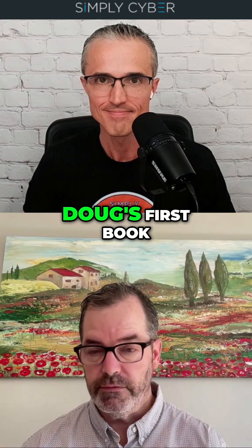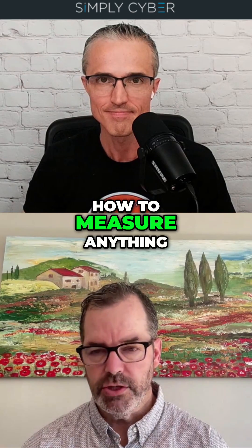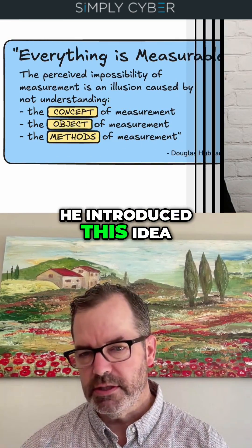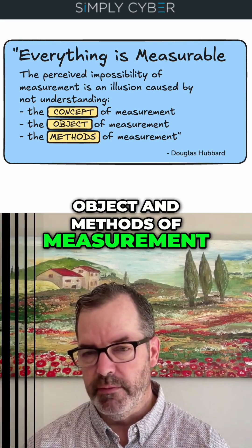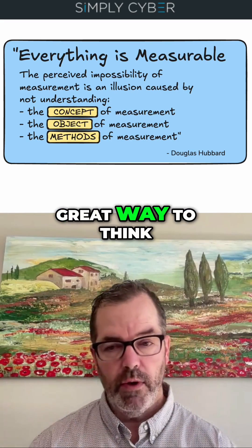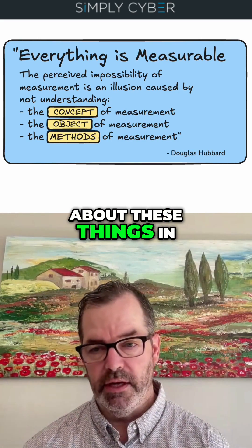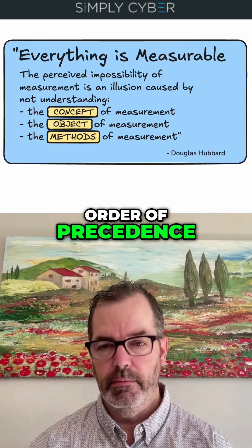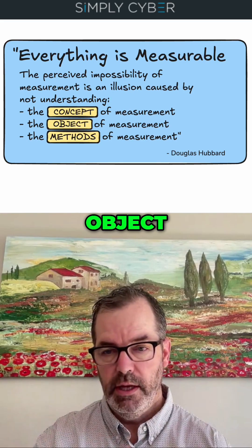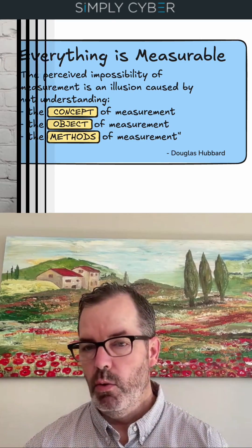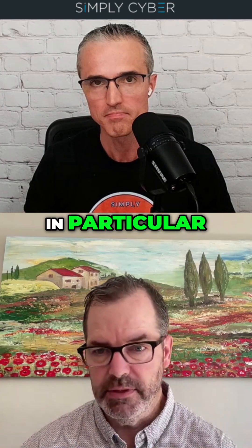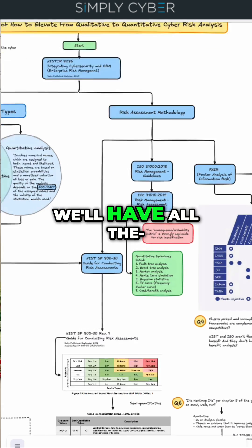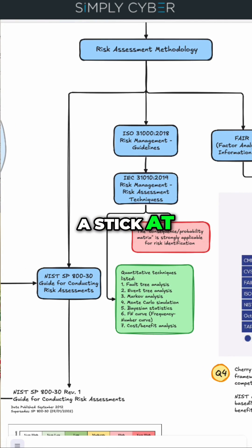Doug's first book, How to Measure Anything, introduced this idea of the concept, object, and methods of measurement. It's a great way to think about these things in order of precedence — concept, object, and methods of measurement. We as practitioners, as technologists in particular, like to start with the methods. We'll have more methods than you can shake a stick at.